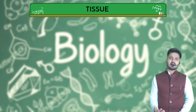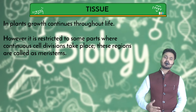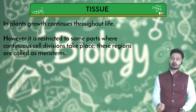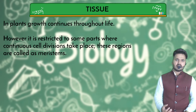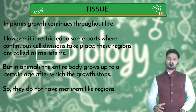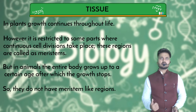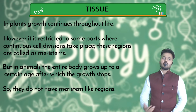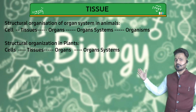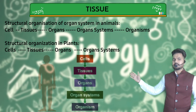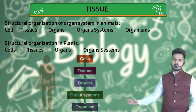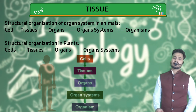Plants grow continuously throughout their life. Their growing regions are called meristems. Animals, on the other hand, stop growing after a certain age, so animals do not need meristem-like regions in their body. The organizational structure for both is: cells, then tissues, then organs, then organ systems, and then the whole organism.